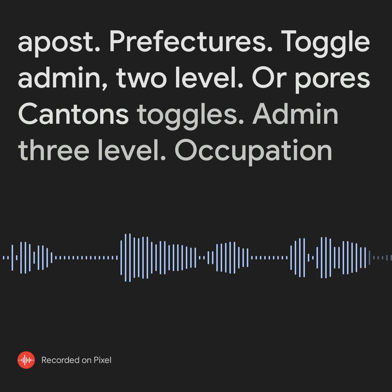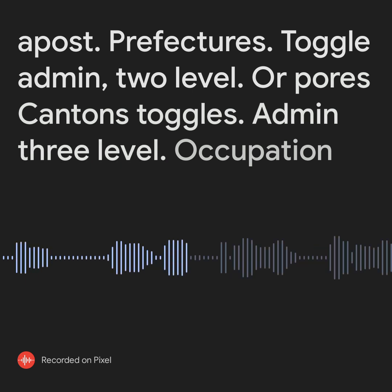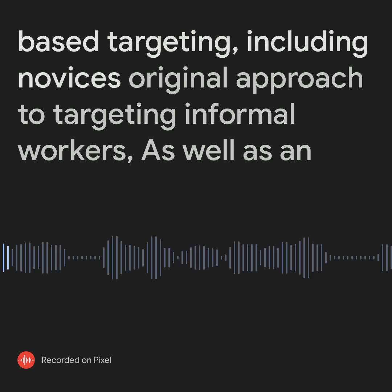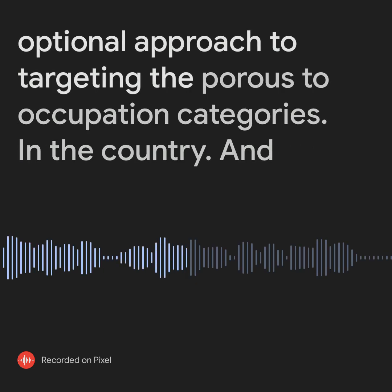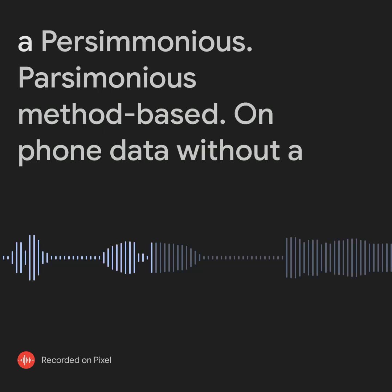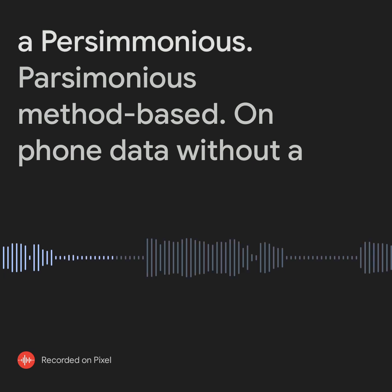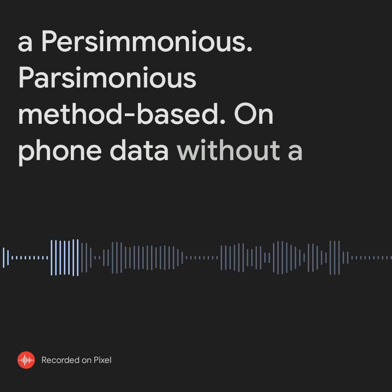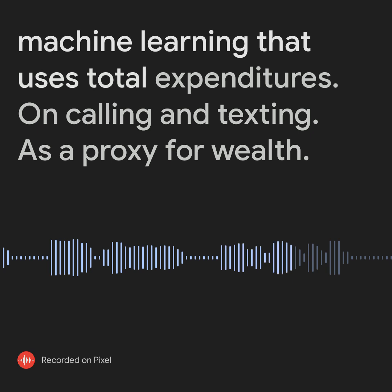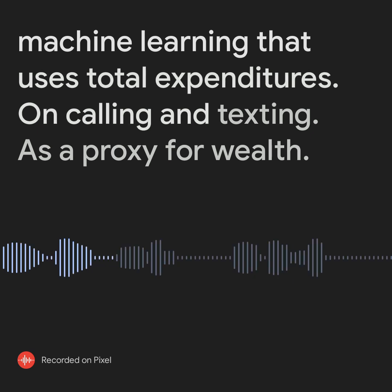The poorest cantons at Togo's Admin 3-level, and occupation-based targeting, including NOVA C's original approach to targeting informal workers as well as an optional approach to targeting the poorest occupation categories in the country. And a parsimonious method based on phone data without machine learning that uses total expenditures on calling and texting as a proxy for wealth.